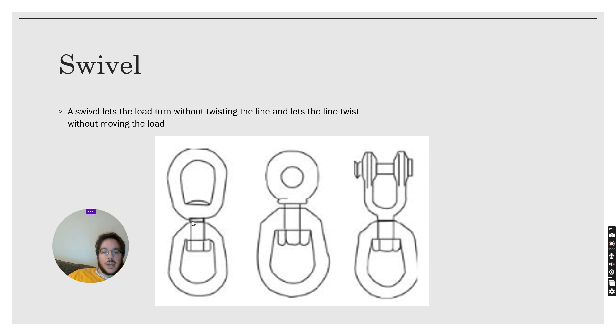Now an important thing is also within our bolt we can have a swivel. The swivel lets us turn the load without twisting the line and it also lets the line twist without moving the load. Which is good because sometimes you're picking up a load and you need to turn it when you put it down. It can't always go exactly parallel to the way you picked it up. So having a swivel is really important.